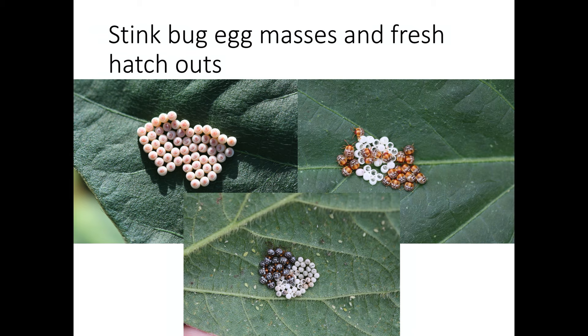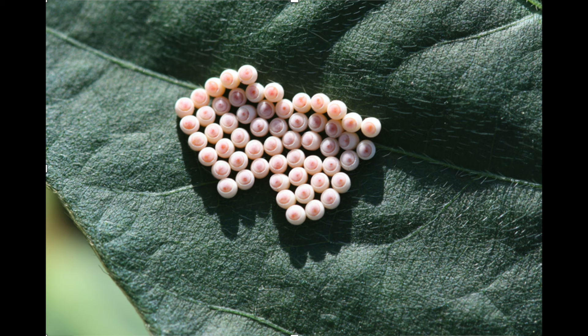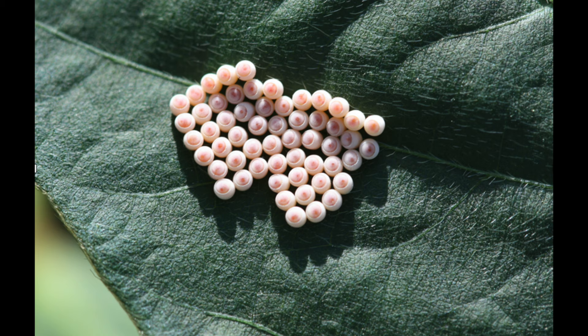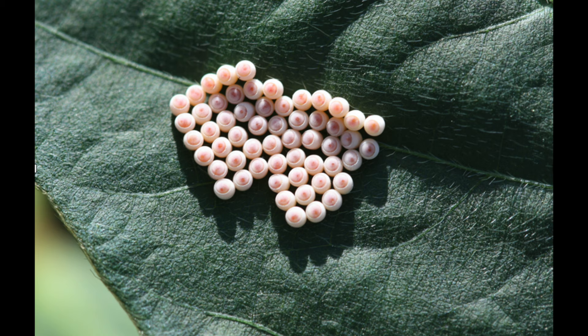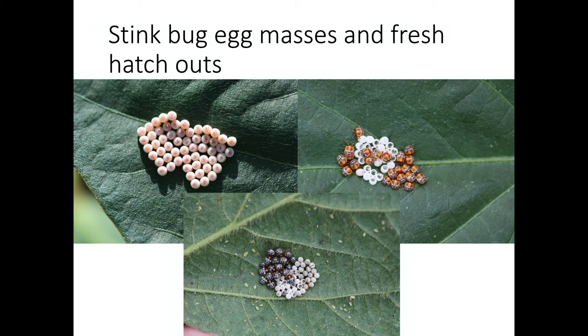Here we have a picture of green stink bug egg masses and fresh hatch outs. The barrel-shaped eggs are laid in a cluster of 20 to 100 on a leaf — they are creamy white when freshly laid and get darker as they get closer to hatching. Here's a picture of the fresh hatch out with first instar immatures. The picture on the upper right shows immatures that have just emerged, and the lower picture shows them a little later — notice the color difference.